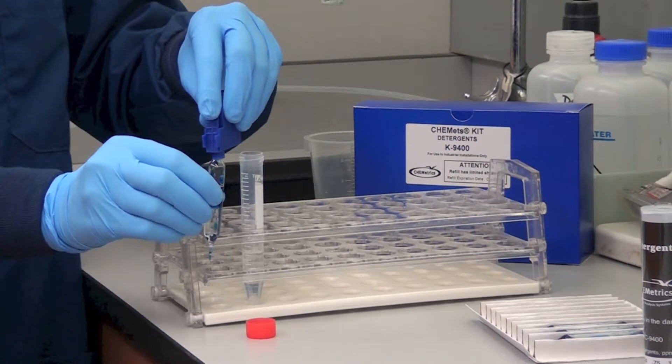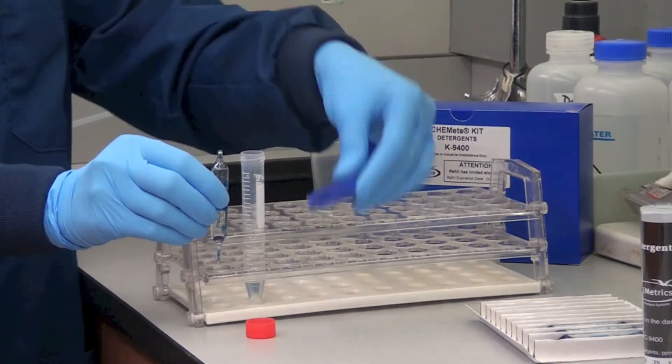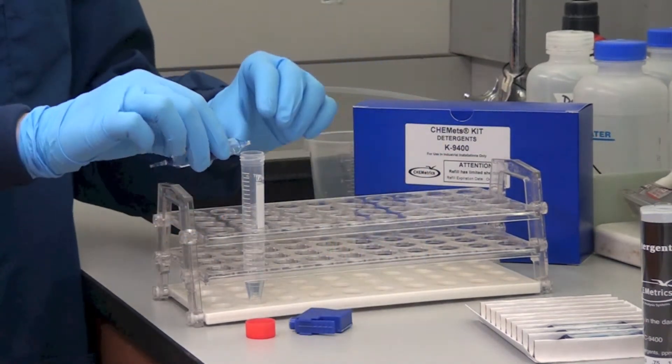By holding the double tipped ampule in a vertical position, snap the upper tip using the tip breaking tool.